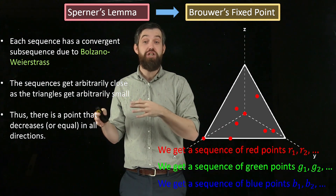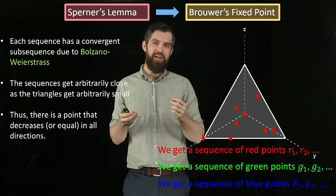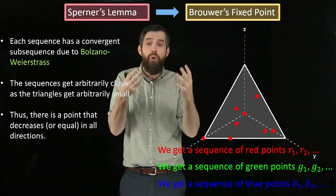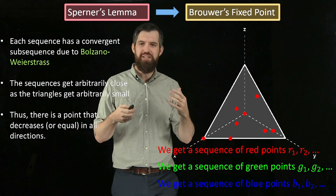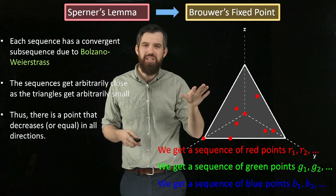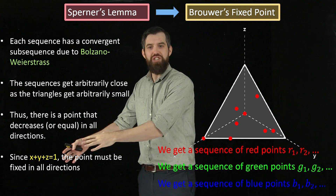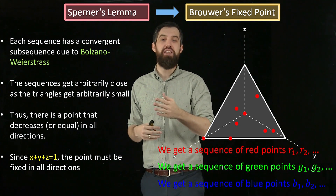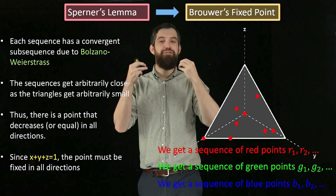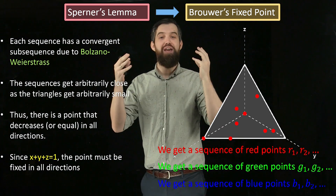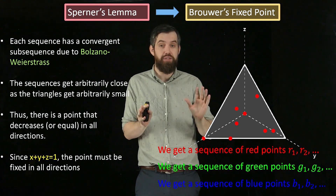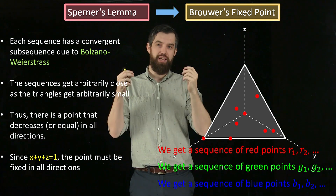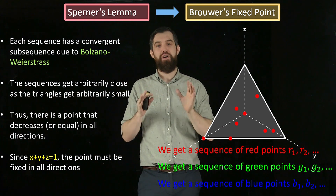Note that in the original definition we said strictly decreasing, but the way convergent sequences work, the convergent point could be on the boundary, so it's possible it's decreasing or equal in all directions. And finally: if the function is decreasing or equal, it's not possible to decrease in all three directions at once — remember x + y + z = 1, so x, y, and z can't all be decreasing. The only possibility is that x, y, and z do not change. In other words, the point is fixed in all directions — we have a fixed point. There must be some spot where f(p) = p, meaning this continuous function fixes the point. That is the proof of Brouwer's fixed-point theorem from Sperner's Lemma.